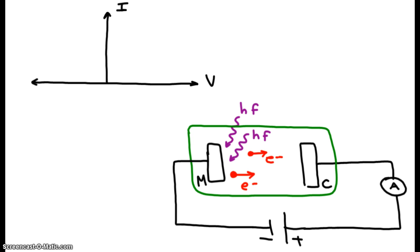Because of this connection, the collector plate will acquire a slight net positive charge, and the metal plate will acquire a slight net negative charge. When we connect the battery or voltage source like this, our main goal is to successfully attract and collect all of the negative electrons ejected from M.